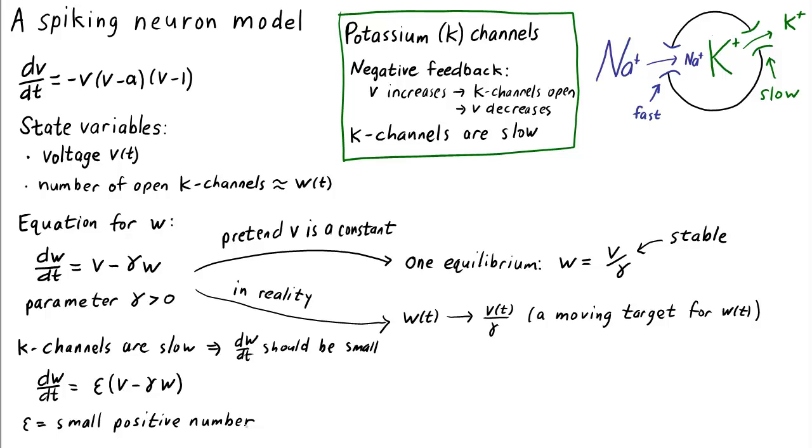With this addition of epsilon, W still chases V divided by gamma, but it just chases it more slowly. We've introduced two positive parameters. Epsilon controls the speed of W, and gamma controls how strongly the potassium channels depend on voltage.